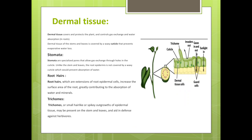Trichomes are small, hair-like or spiky outgrowths of epidermal tissues. They may be present on the stem and leaves and aid in defense against herbivores.